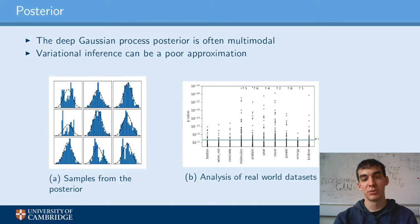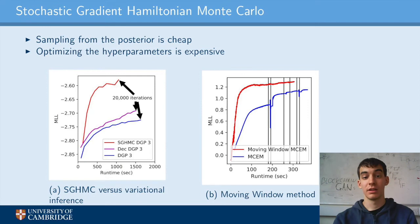In fact, when we looked at a few real-world datasets, we found that all of them had multimodal posteriors. This suggests that a more flexible approximation, such as MCMC sampling, could improve the performance of deep GPs.